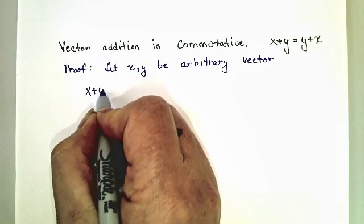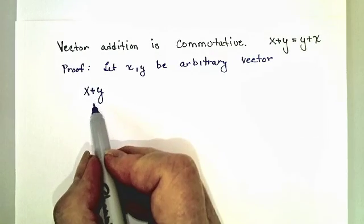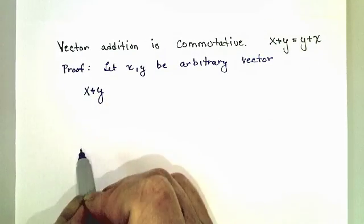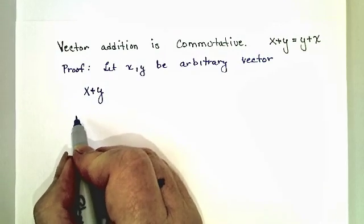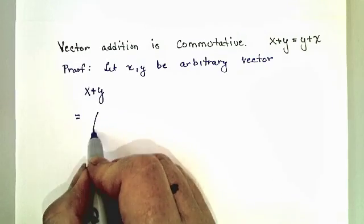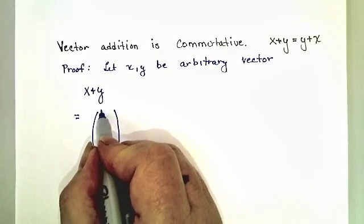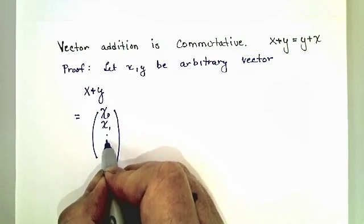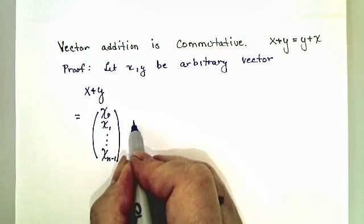Now, what does that mean? Well, if these are vectors, we know that from our notation that x is a vector of size n and so is y. So we'll write it as x is the column vector with real entries chi 0 out to chi n minus 1.